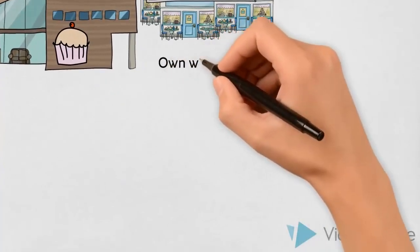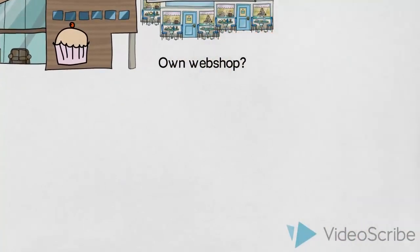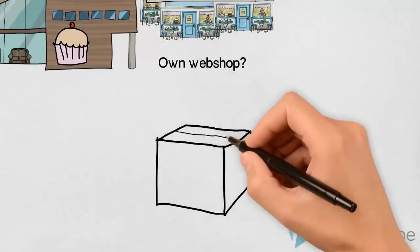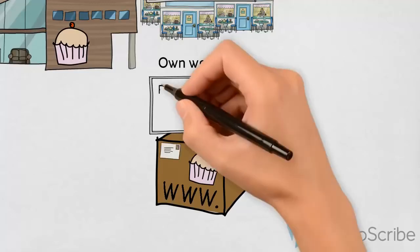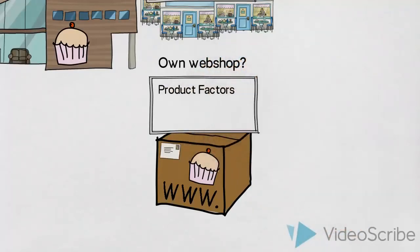We could also imagine that the company were keen on creating an online webshop where their customers could order their cakes and desserts and get them delivered directly to their homes. In addition to the market and producer factors which we have already discussed, we would also advise them to consider some factors about the actual products.